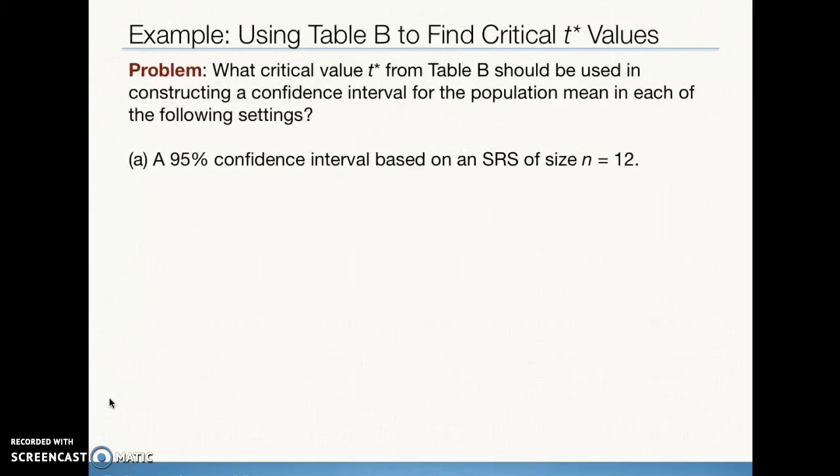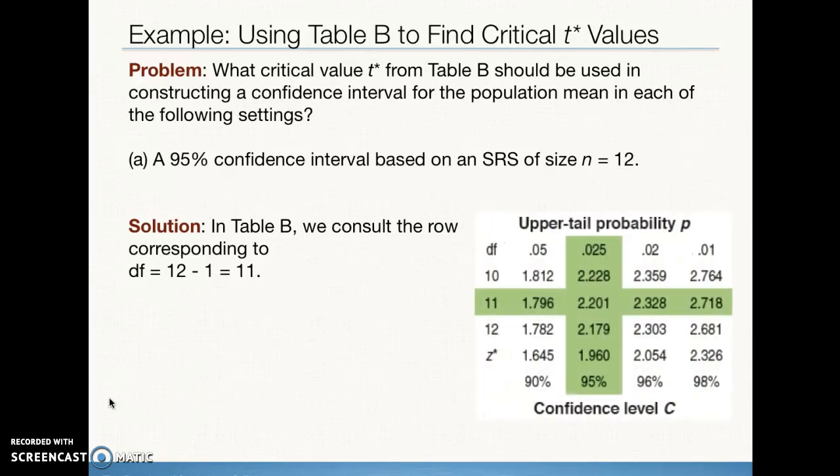Let's practice finding the appropriate t-star for a few different situations. If we want a 95% confidence interval based on a simple random sample of size n equals 12, what we can do is go to table B. We're going to be looking in the degree of freedom row for 11, and we're going to be looking in the column for 95% confidence. Now where those two meet, we get our t-star, which is 2.201.